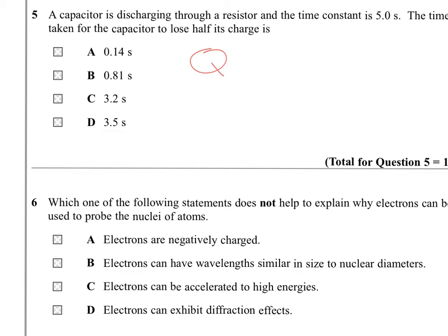So we have the Q at some time equal to Q naught E to the minus T over R C. So Q over Q naught equals E to the minus T over 5 in our case.